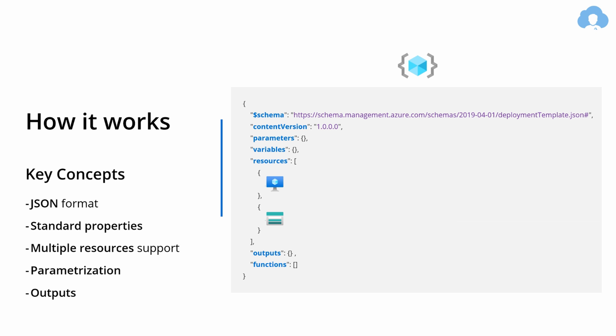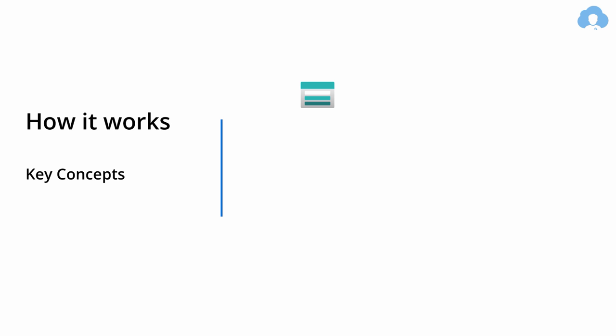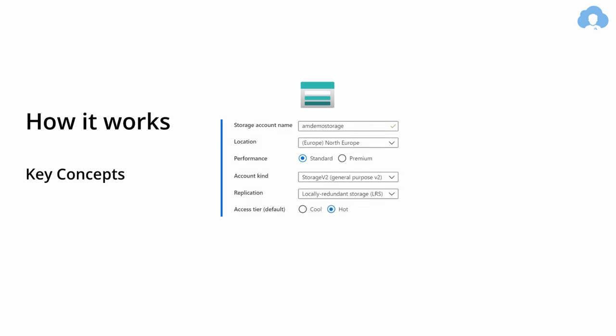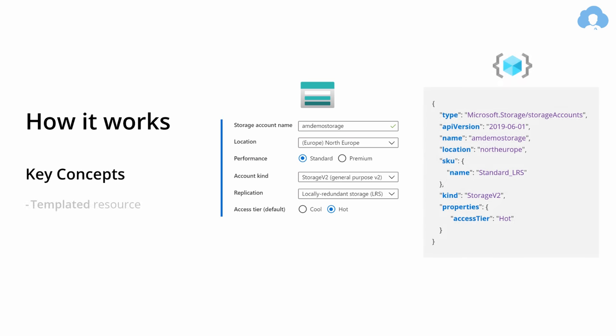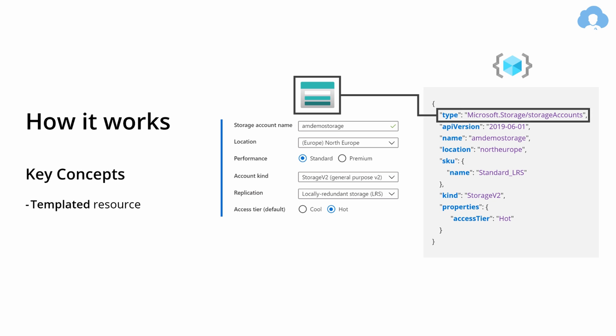The general structure of the template is not that complicated. Let's look at the JSON object describing a service — for instance, a storage account. The first key property is the type, which describes what service you're deploying. It's a mandatory field and it's a concatenation of a resource provider name — in this case, Microsoft.Storage — and the name of the service, in this case, storage accounts. Additionally, you have an API version.